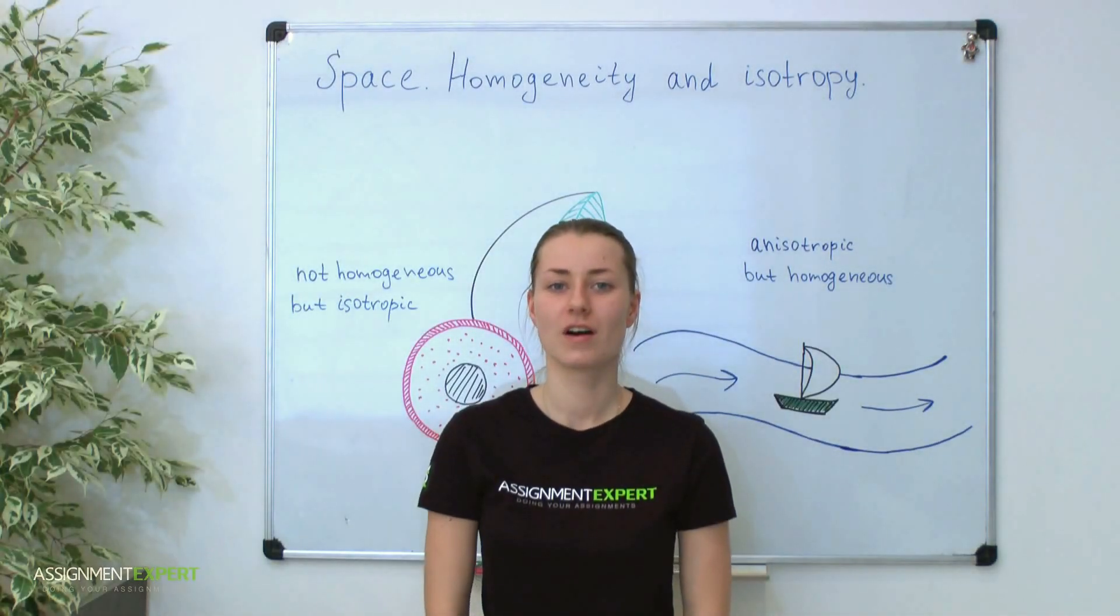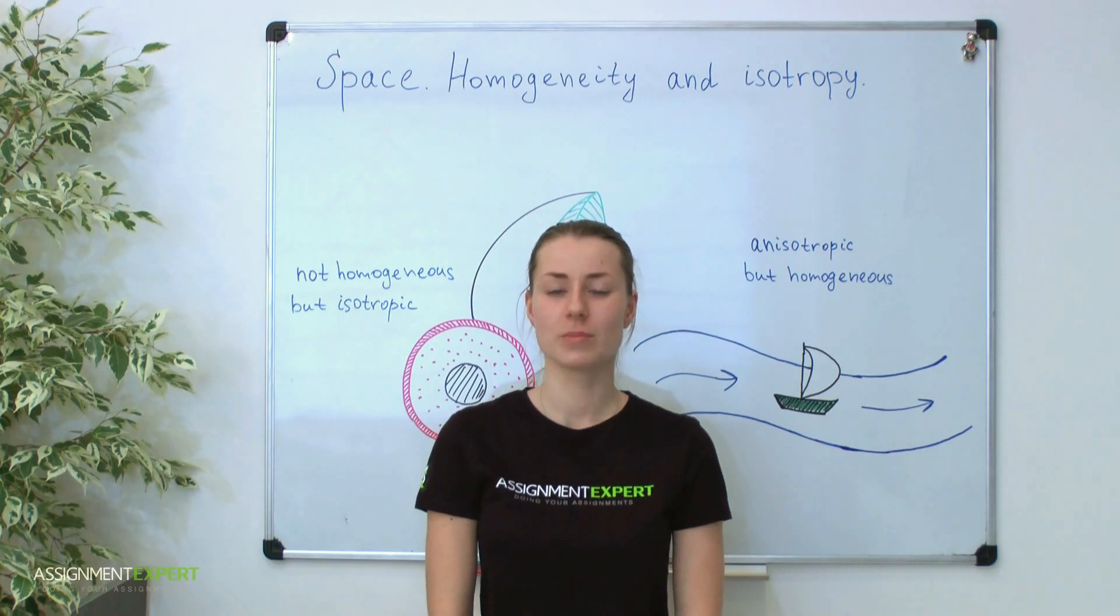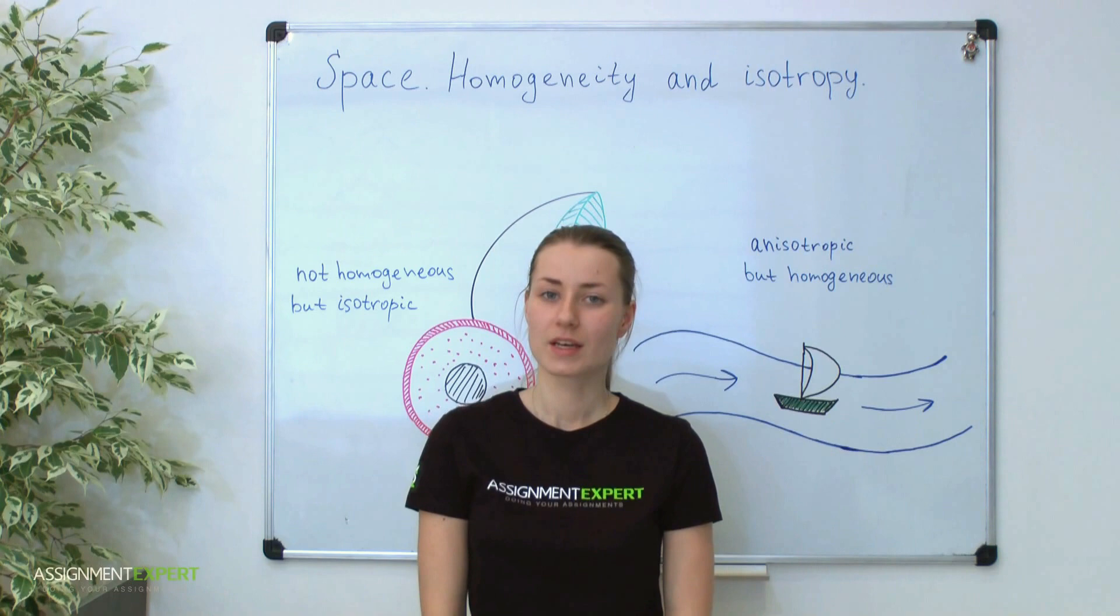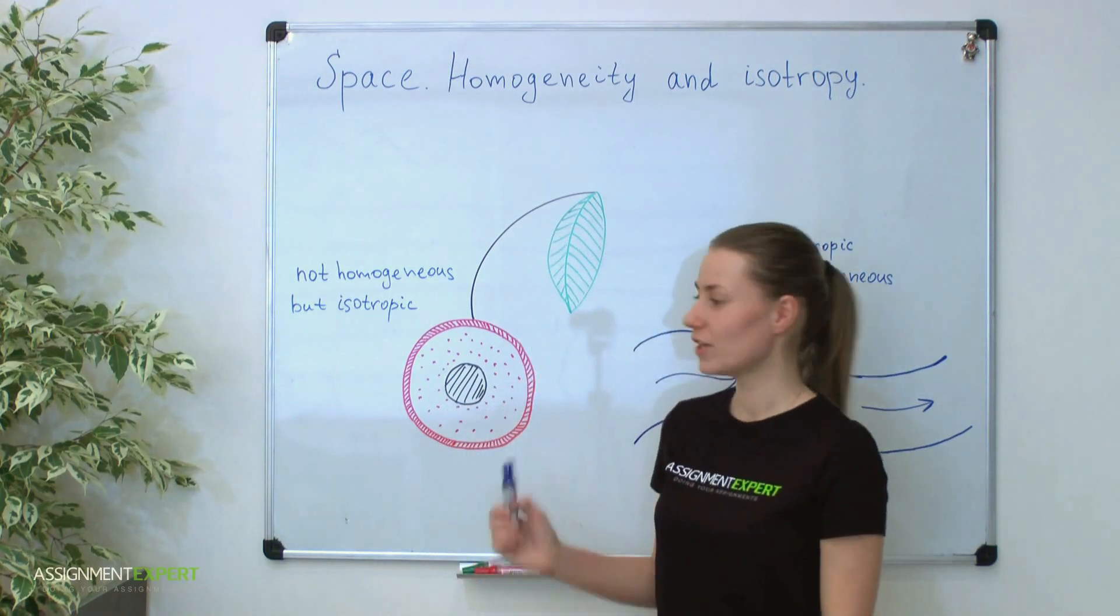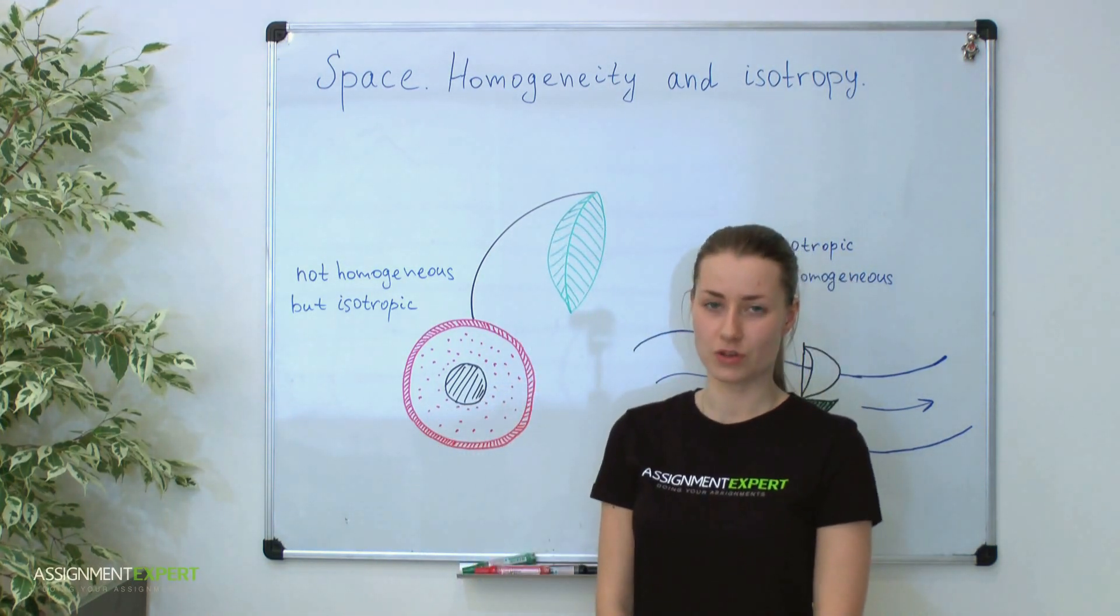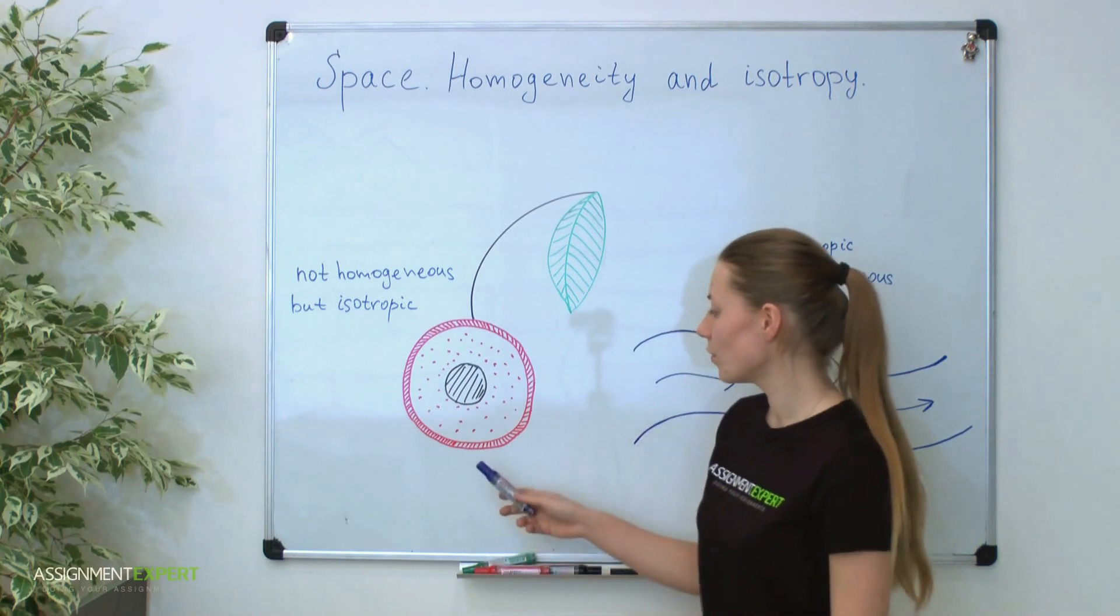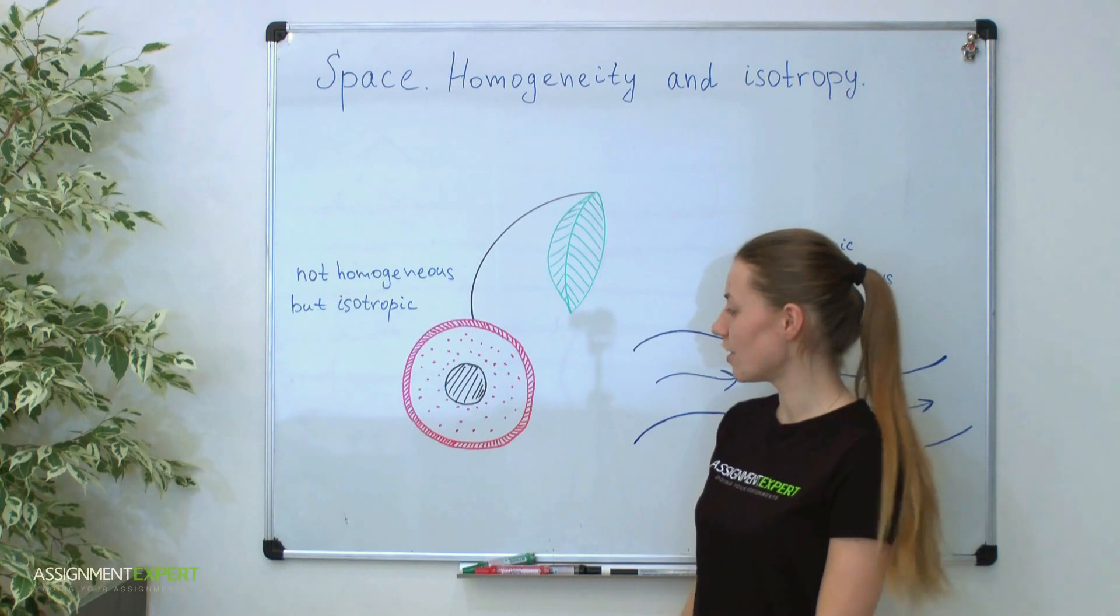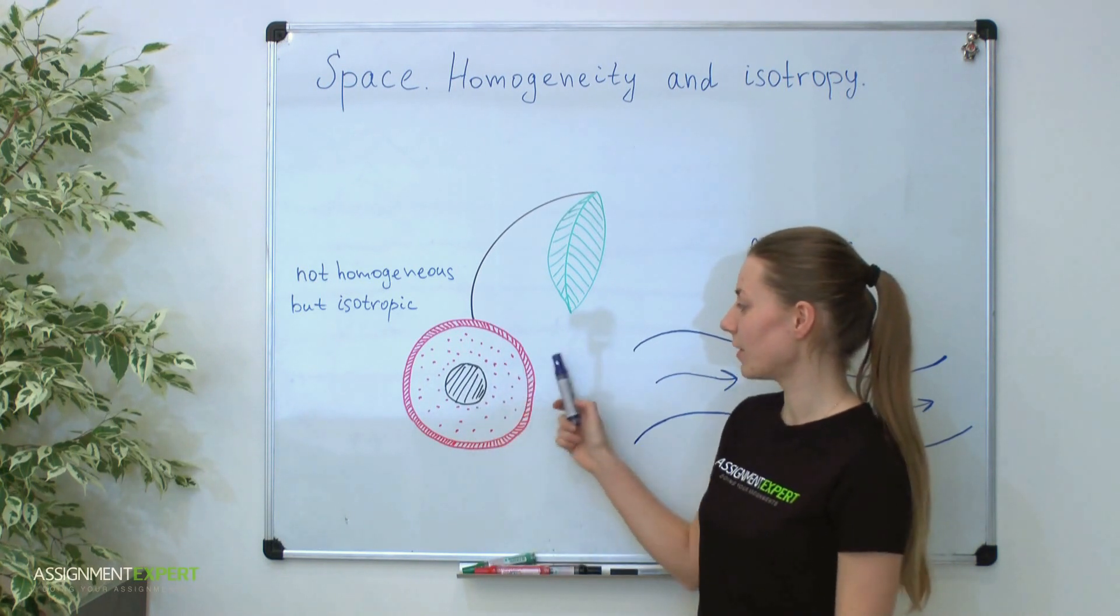Now you can think that isotropic object must necessarily be homogeneous. I can show you that it's not true. Consider following two examples which illustrate the difference between homogeneity and isotropy. The first is a ball with three layers of different structure. You can imagine this object as a cherry which has a pit, pulp and peel.